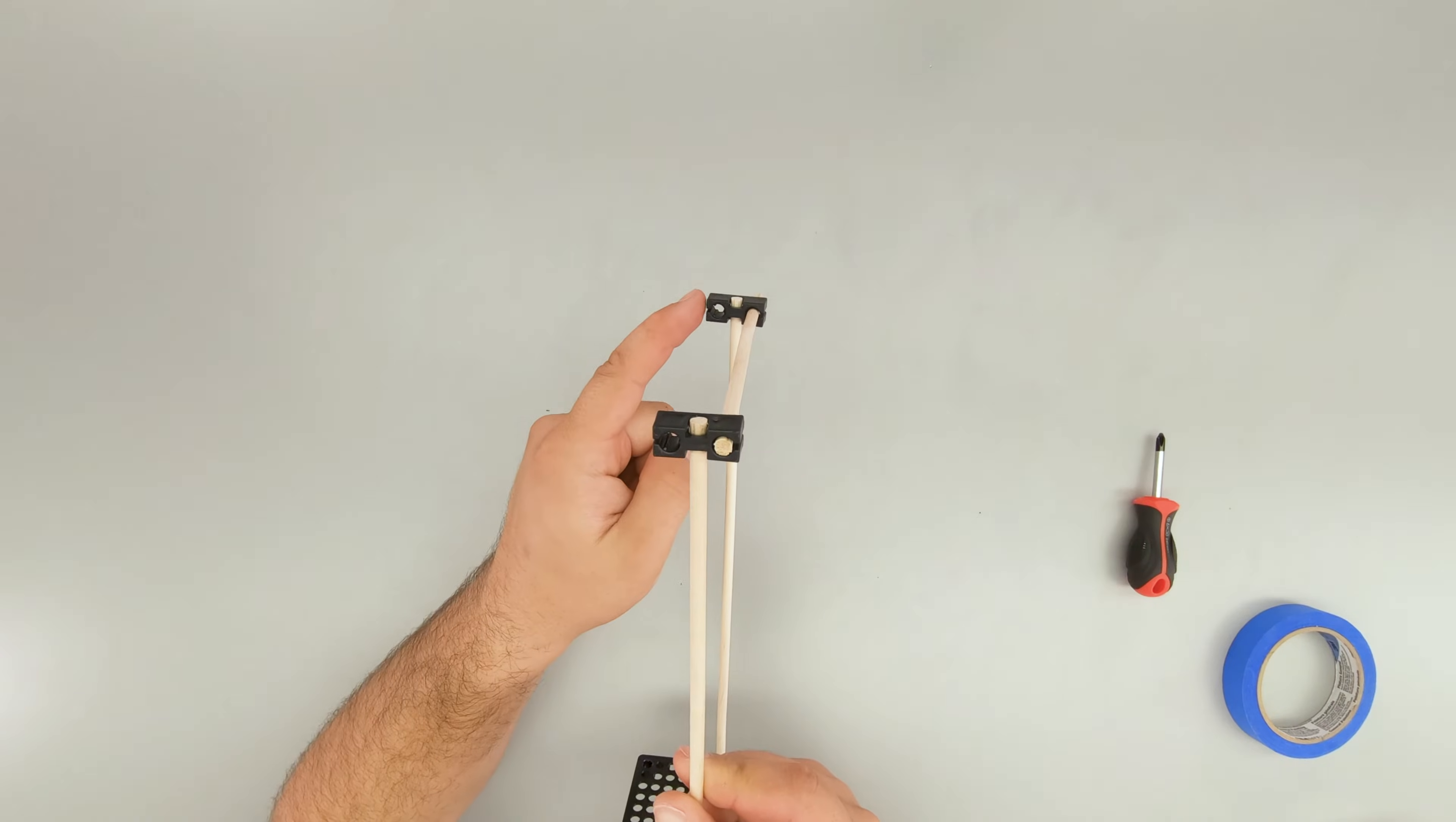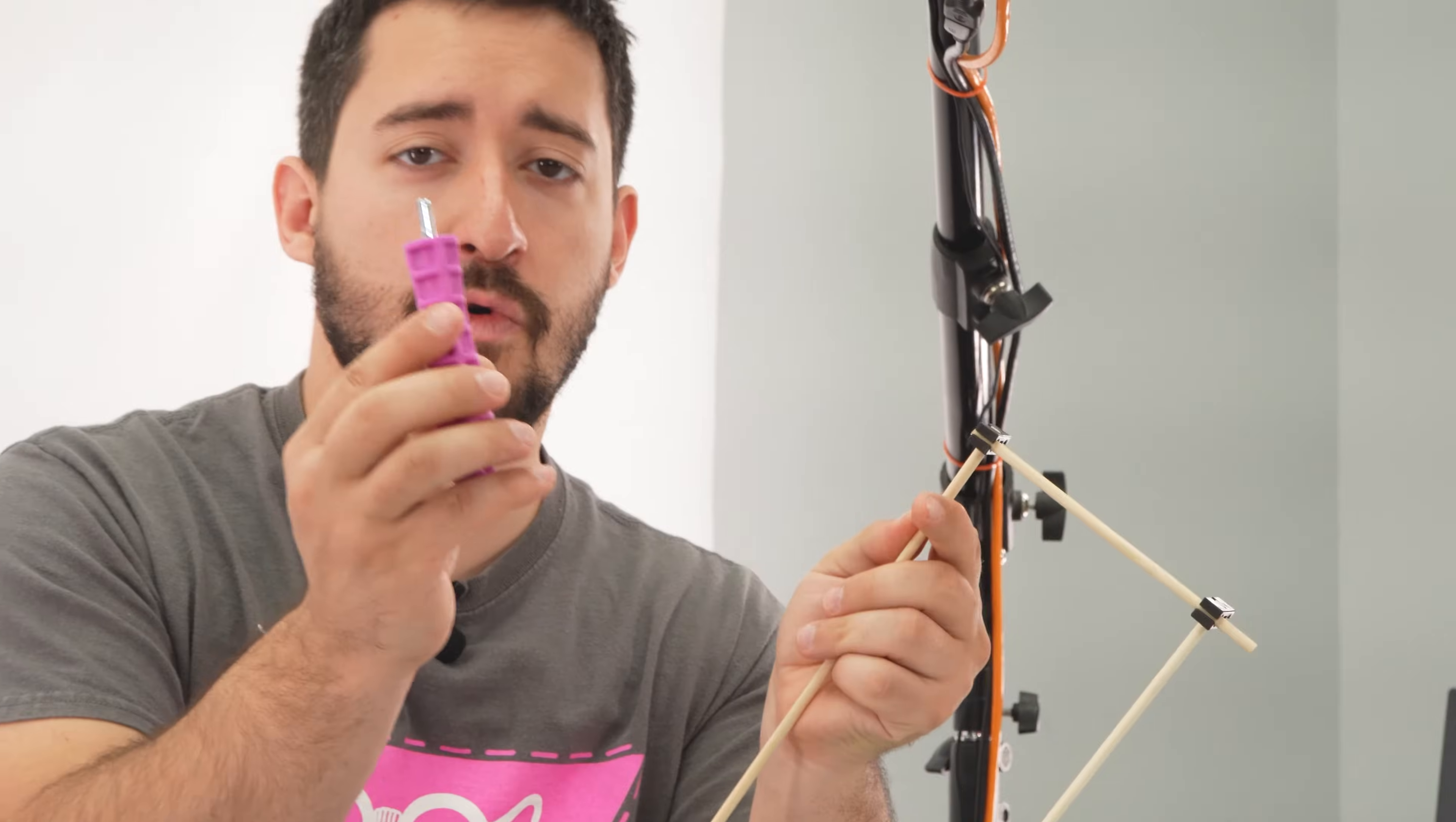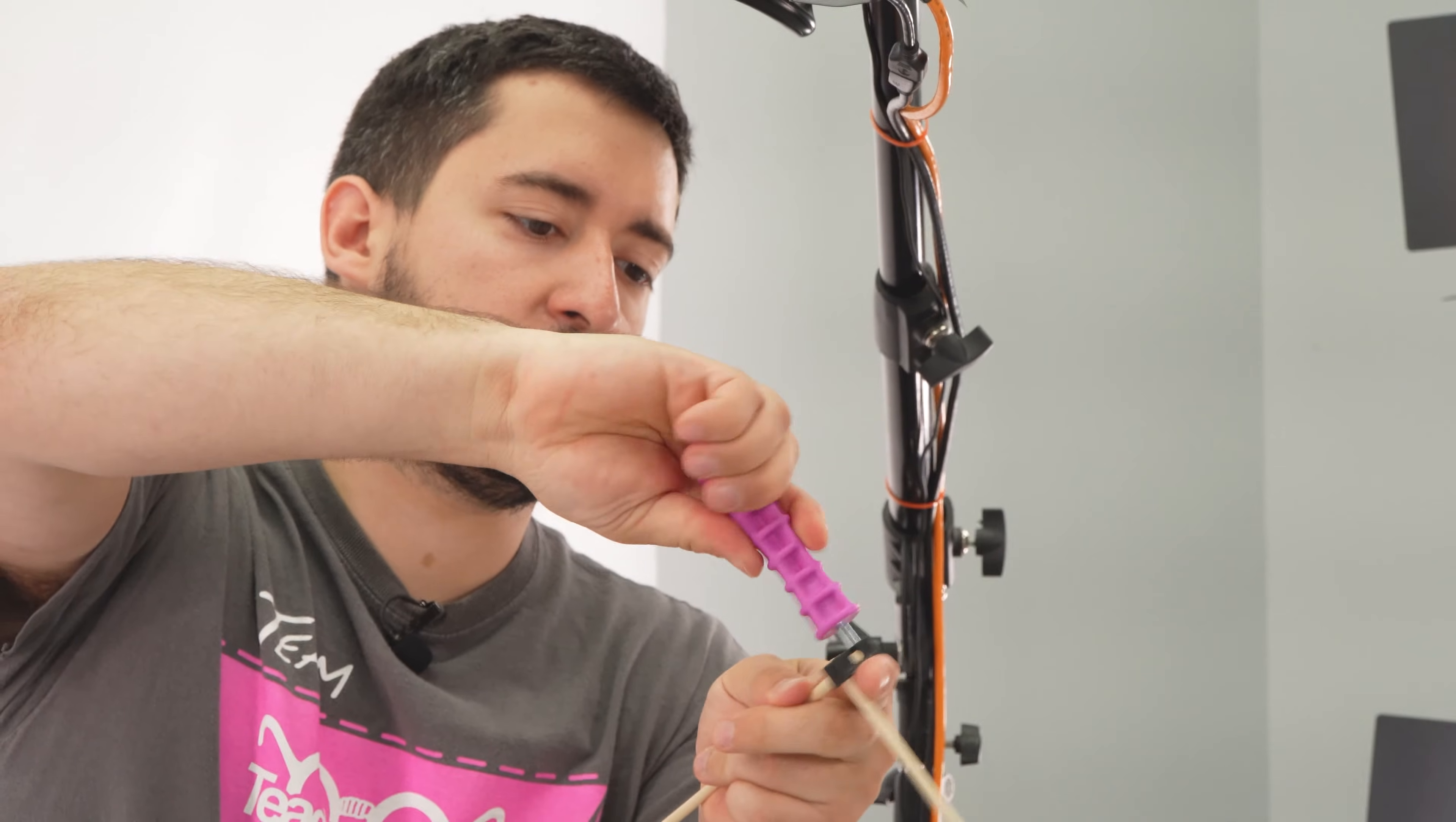Each of these blocks has one empty hole. I want to remove the teeth from those holes, so I'm going to use a reamer. I'm going to push and twist it into the hole until the teeth are gone.